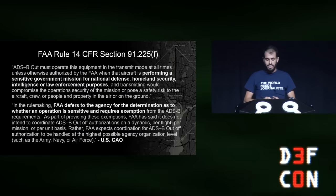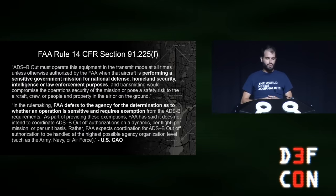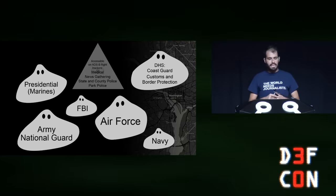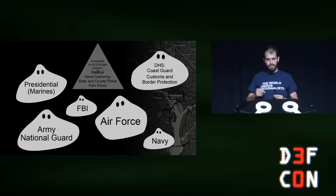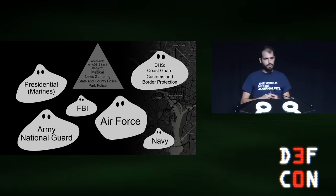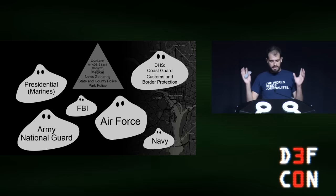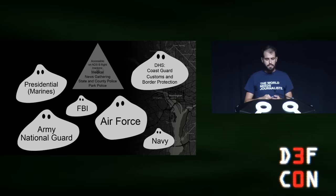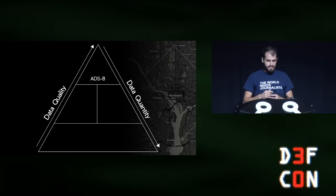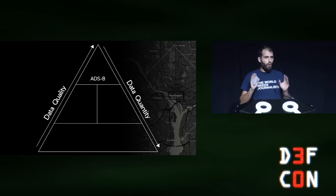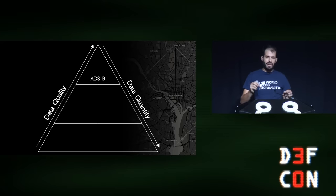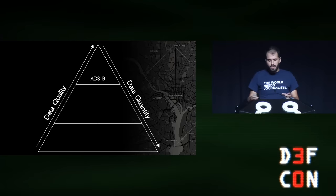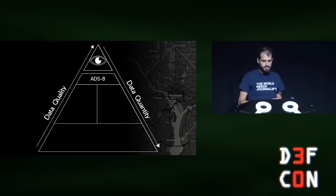As you can imagine, with the military self-exempting itself from transponders, it leaves very little for flight trackers in the D.C. area. What we normally get is medical, news gathering, state and county police, and park police. Everything else is a ghost helicopter for the purposes of this discussion. Our flight data pyramid emerges with ADS-B at the top with the highest data quality — and only in the D.C. area is it true that this provides the lowest data quantity when talking about helicopters. And it didn't feel right having a pyramid about government surveillance without this, so you have that.